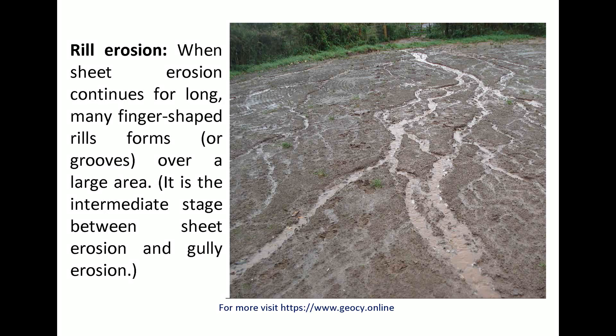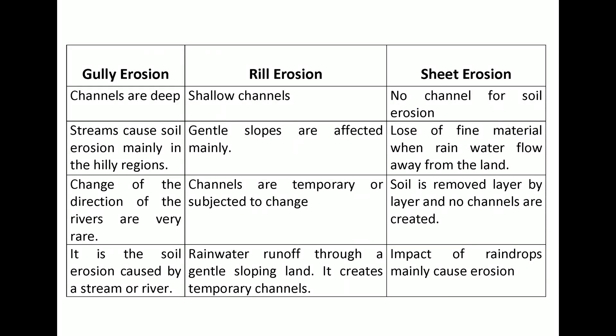Rill erosion is the intermediate stage between sheet erosion and gully erosion. Comparing the types: gully erosion creates deep channels; rill erosion creates shallow channels; sheet erosion has no channels. Streams cause soil erosion mainly in hilly regions, while gentle slopes are mainly affected by sheet erosion with loss of fine material. Channels in rill erosion are temporary or subject to change, while in sheet erosion, soil is removed layer by layer with no channels created.